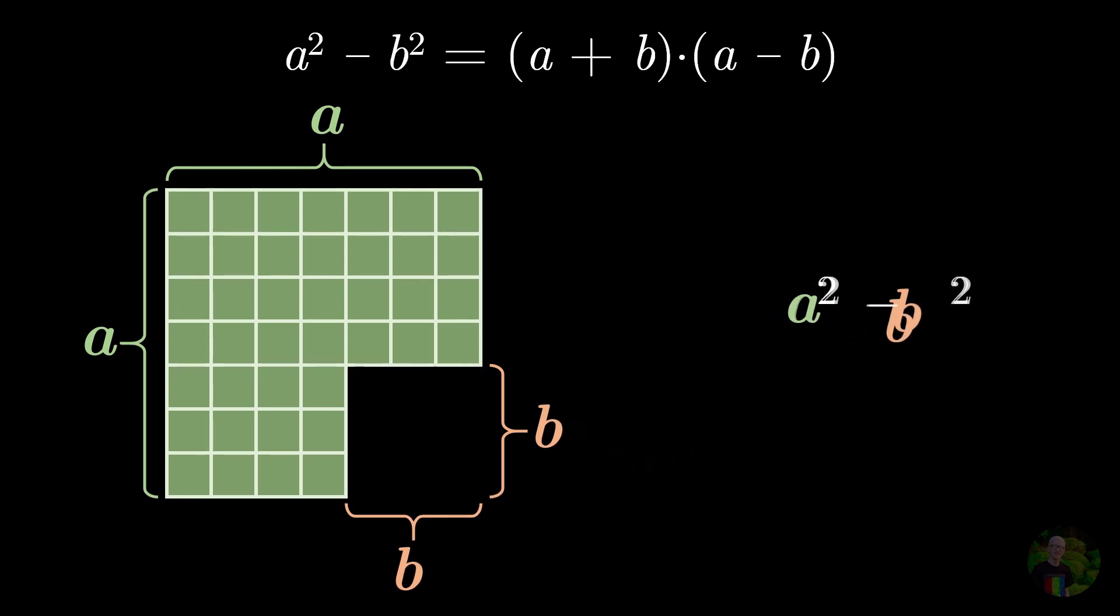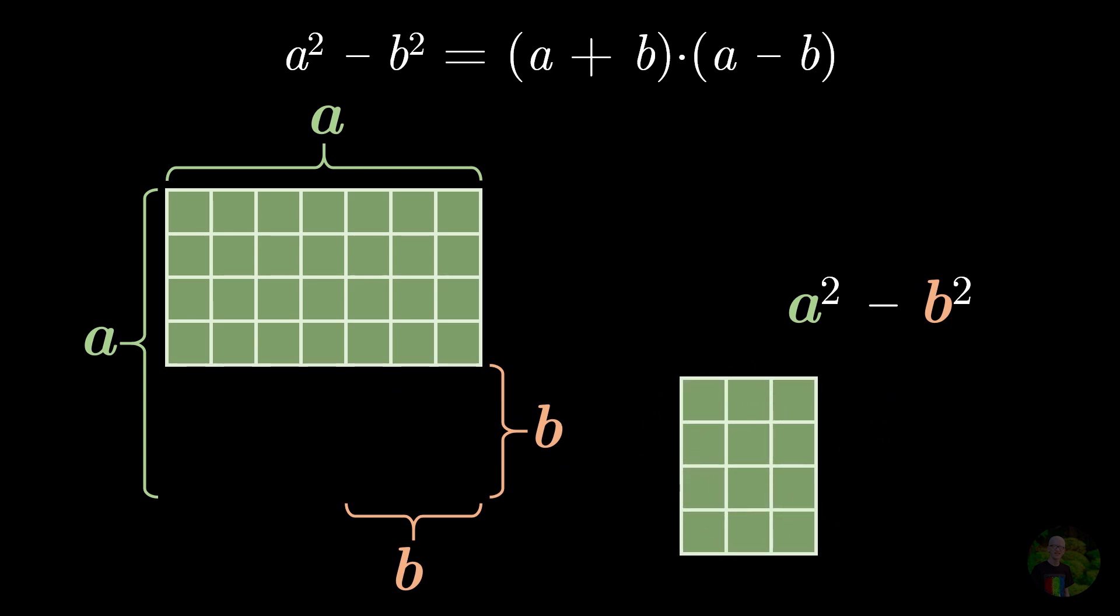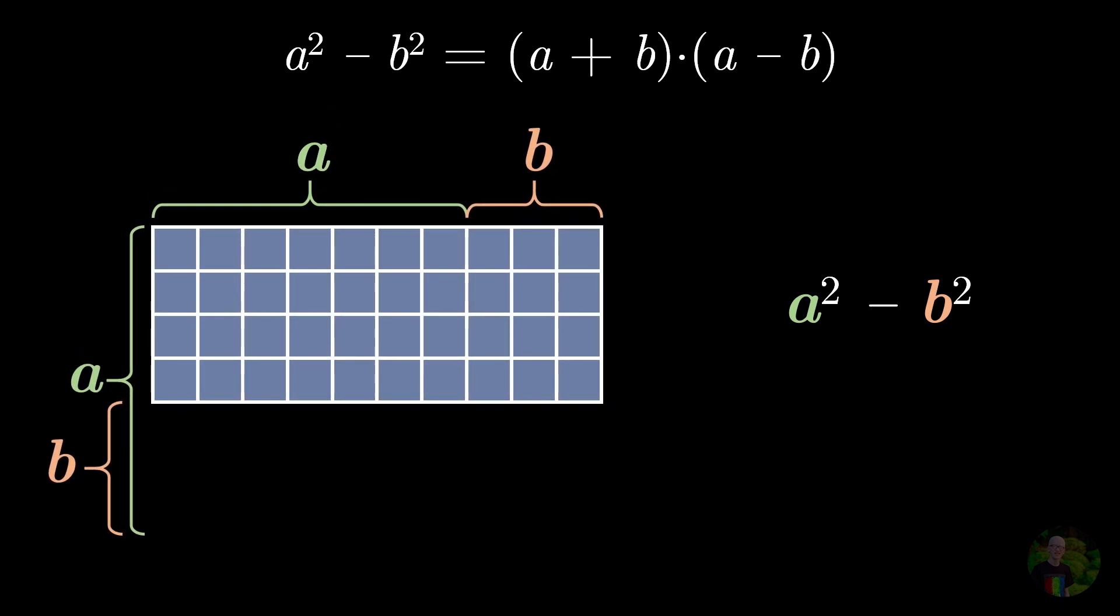Now, let's subtract b squared from a squared, and I'm just gonna take that block, rotate it 90 degrees, and fix it right there. And we get a new rectangle with one of the side length a plus b and the other side length a minus b. And that's what happened when we did a square minus b square. How cool is that?